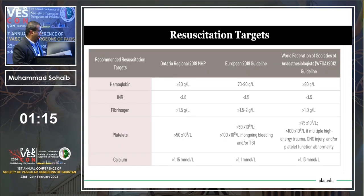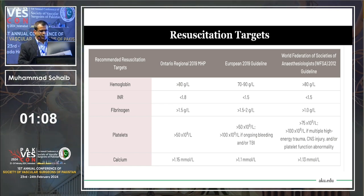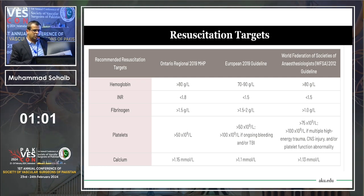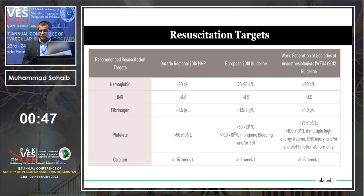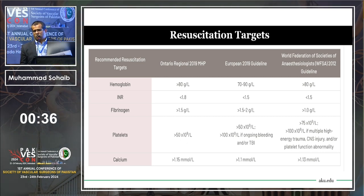Resuscitation targets during massive hemorrhage: hemoglobin should be 80 g/L per Canadian Ontario guidelines, or 70–90 per European guidelines. INR should be less than 1.5. For fibrinogen, if we want to give tranexamic acid, the fibrinogen level should be above 1.5 g/L — because tranexamic acid is an anti-fibrinolytic and will not work if fibrinogen levels are low. Platelets should be greater than 50 if the patient is actively bleeding.